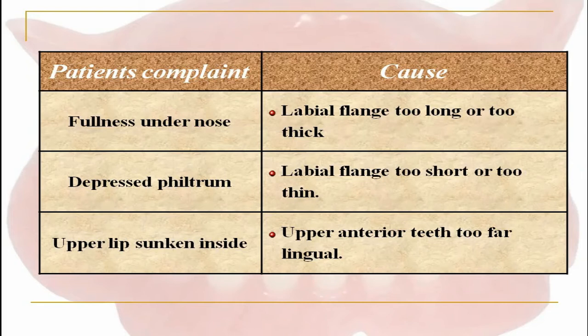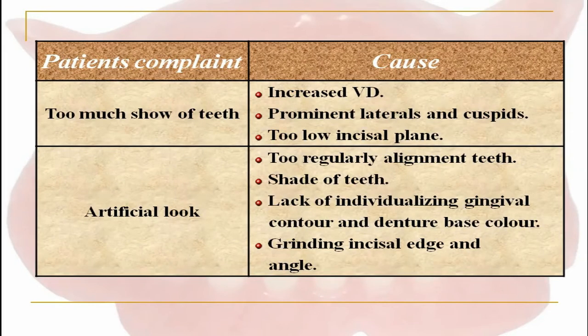If the depressed philtrum appearance is the complaint, then the cause could be due to too short or too thin labial flange. For upper lip sunken appearance, the cause could be the placement of upper anterior teeth too palatally. For too much visibility of the teeth, the cause could be increased vertical dimension, prominent laterals and cuspids, or too low incisal plane.